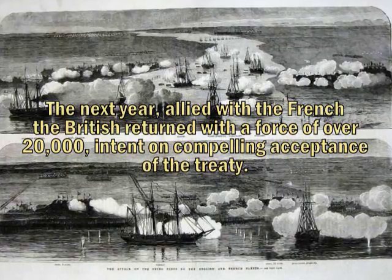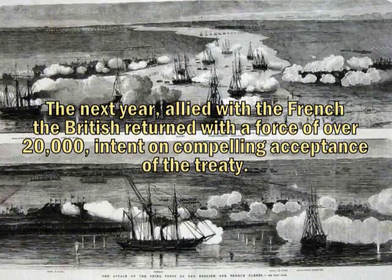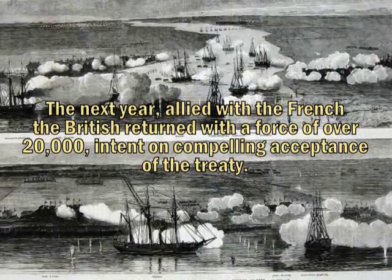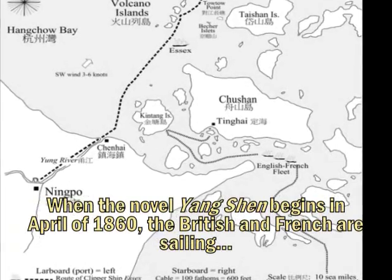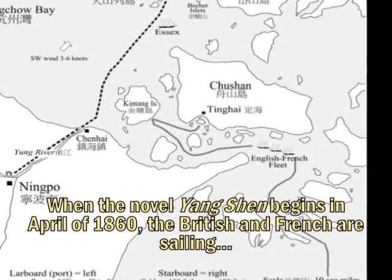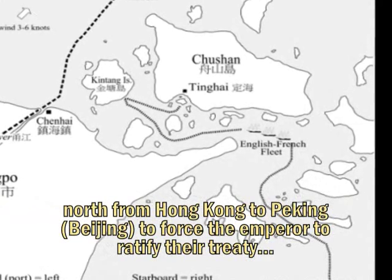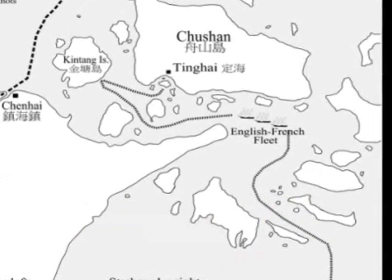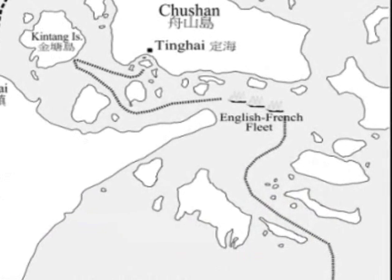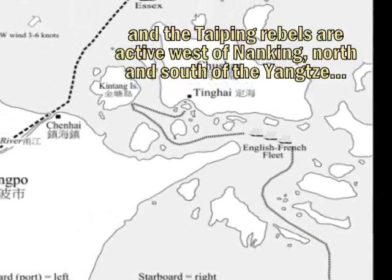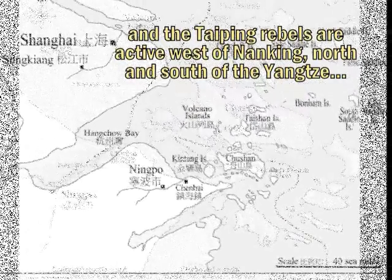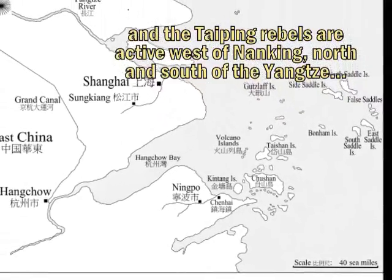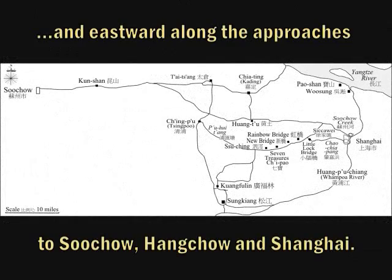The next year, allied with the French, the British returned with a force of over 20,000, intent on compelling acceptance of the treaty. When the novel Yangshan begins in April of 1860, the British and French are sailing north from Hong Kong to Peking to force the emperor to ratify their treaty. And the Taiping rebels are active west of Nanking, north and south of the Yangtze, and eastward along the approaches to Suzhou, Hangzhou, and Shanghai.